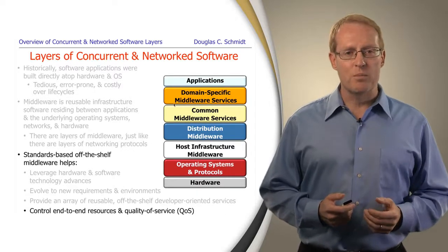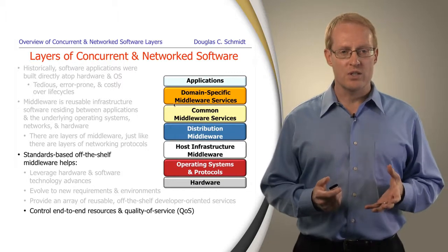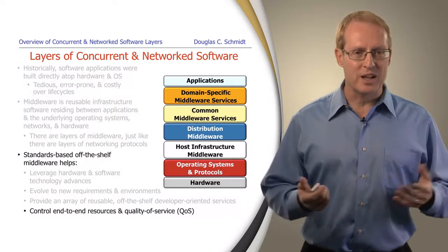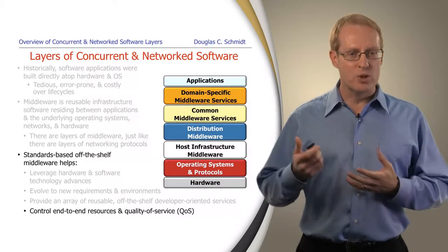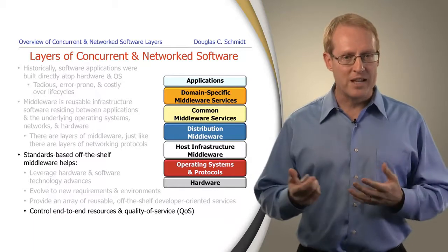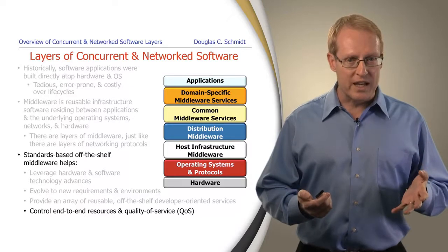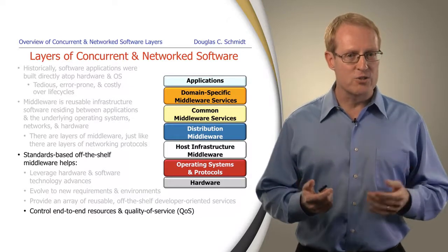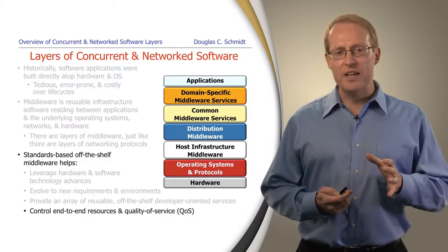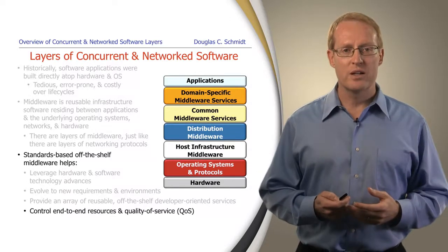Another important property that middleware provides is control over end-to-end resources and quality of service. For example, the middleware may be responsible for allocating replicas and keeping track of them, making sure they're running, ensuring that state is transferred correctly between active and passive replicas, handling resource allocation tasks in a distributed system, looking up information, keeping track of liveness, and so on. These are all things that used to have to be done by the application developers, but now can be offloaded to the middleware itself.